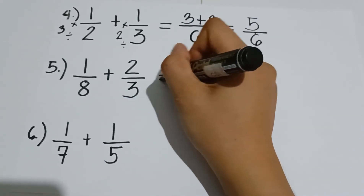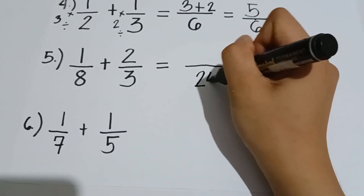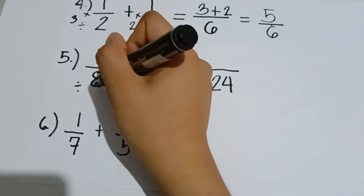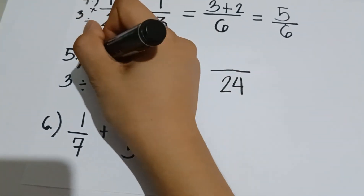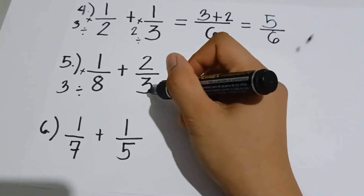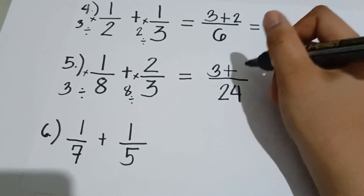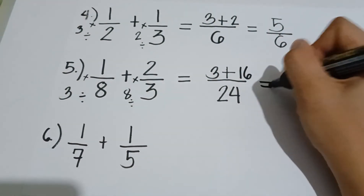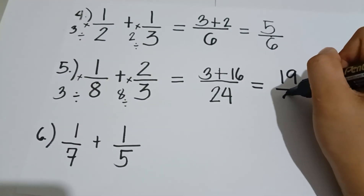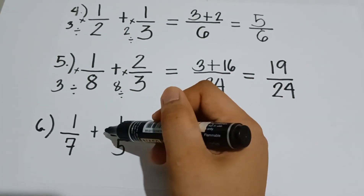Example number 5: 1 eighth plus 2 thirds. Find the LCD of 8 and 3 — that is 24. So 24 divided by 8 is 3. We multiply 3 by the numerator 1; 3 times 1 gives us 3. Plus, 24 divided by 3 is 8. We multiply 8 by the numerator 2; 8 times 2 is 16. The final answer is 3 plus 16, which gives us 19, over the denominator 24. So 1 eighth plus 2 thirds is equal to 19 over 24.